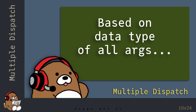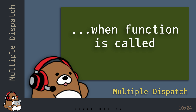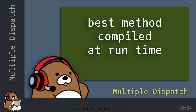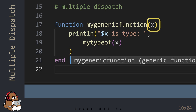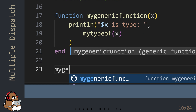In Julia, the term Multiple Dispatch means that Julia will dispatch the most appropriate method based on the data types of all of the function arguments at the time the function is called. Julia will then compile that one method and evaluate it, ignoring all of the other methods. In this example, MyGenericFunction will determine which method to call for the MyTypeOf function based on the data type of the argument in MyGenericFunction.